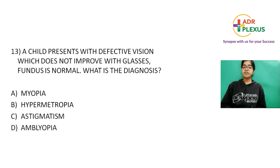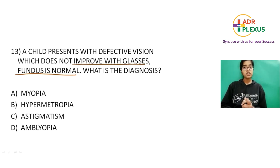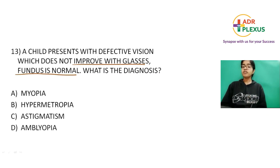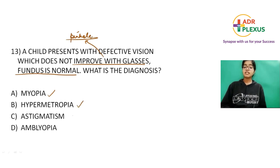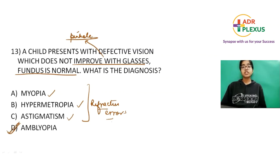Next: a child presents with defective vision that does not improve with glasses and the fundus is normal. No organic pathology, no refractive pathology - the eye is totally normal with no improvement with refraction through a pinhole either. Myopia, hypermetropia, and astigmatism are all refractive errors and should improve with glasses. The diagnosis is amblyopia - diminution of vision in the absence of any organic pathology.